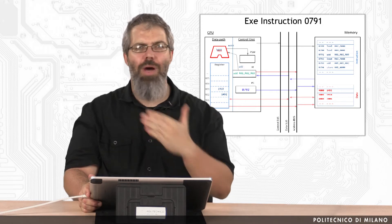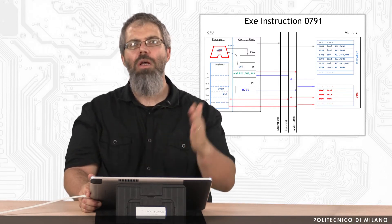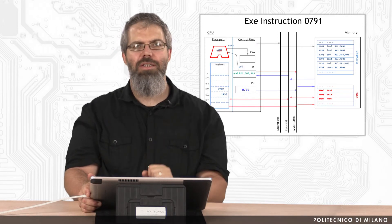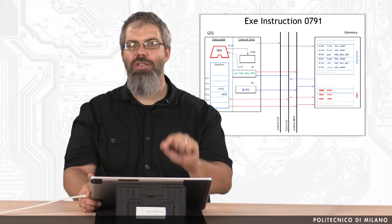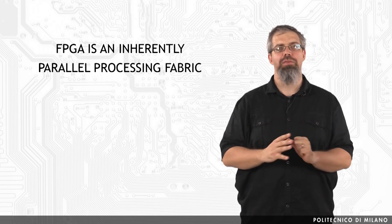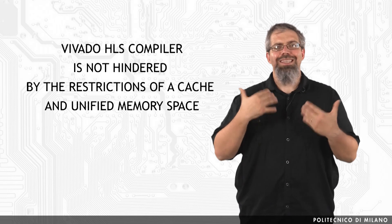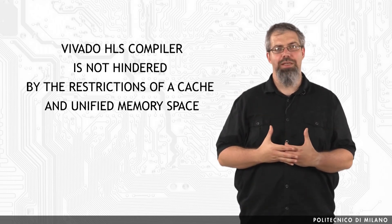This example, even if quite simple — remember we started with a single C instruction — shows that even a simple operation such as an addition of three values results in multiple assembly instructions that take a lot of time to execute. On the contrary, the FPGA is an inherently parallel processing fabric capable of implementing any logic and arithmetic function that can run on a processor. The main difference is that the Vivado High Level Synthesis compiler, used by SDXL to transform OpenCL software descriptions into RTL, is not constrained by the restriction of a cached unified memory space.